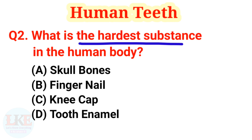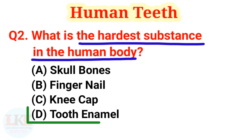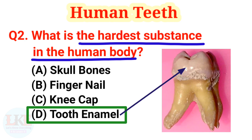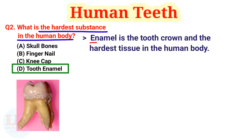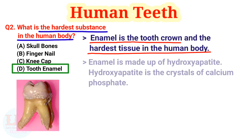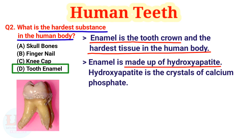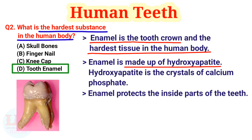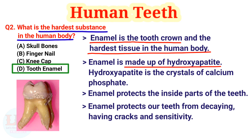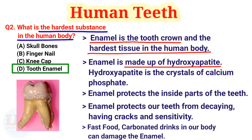Question number 2: what is the hardest substance in the human body? Options: A) skull bones, B) fingernail, C) kneecap, D) tooth enamel. The right answer is option D, tooth enamel. Enamel is the tooth crown and the hardest tissue in the human body. Enamel is made up of hydroxyapatite, which is crystals of calcium phosphate. Enamel protects the inside parts of the teeth from decaying, cracks, and sensitivity. Carbonated drinks in our body can damage the enamel, so you should stay away from them.